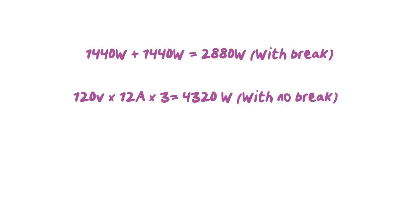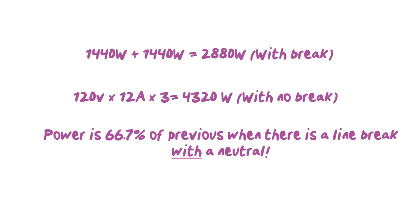And this is all leading up to a point here. It's leading up to the fact that power is always going to be 66.7% of the previous when there is a line brake with a neutral. So again, power is always 66.7%. You don't have to go through and do all the crazy math. You can work out what your power was originally and take 66.7% of that, and then you'll end up with the power with a neutral brake.